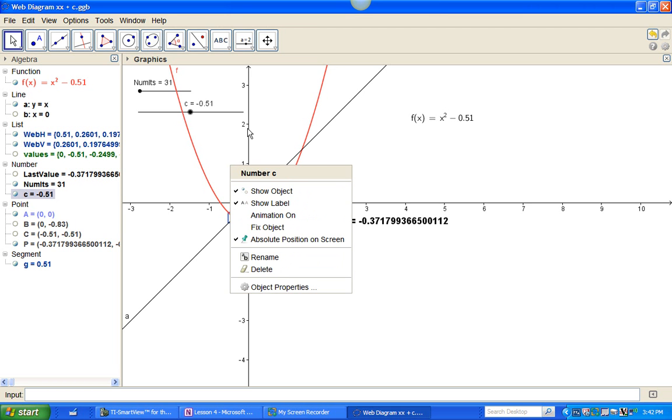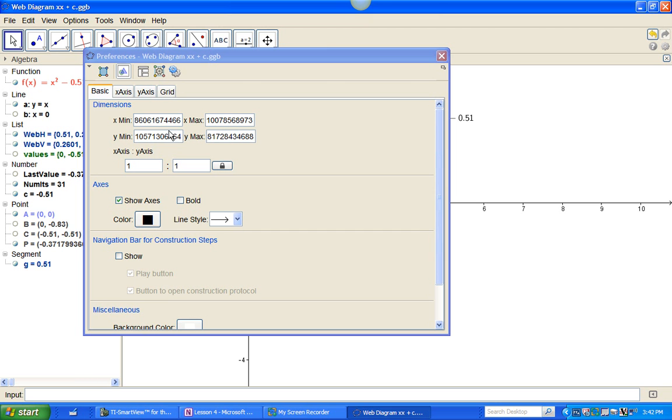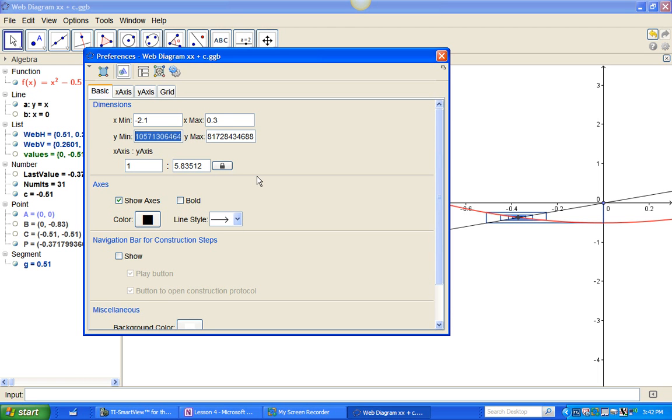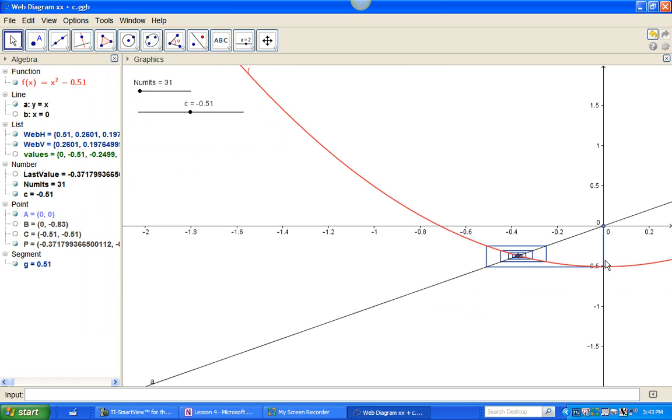Since the action is all in this region here, maybe I can go to my graphics and I can change things. Let's make our x min negative 2.1 because we're not really interested in less than negative 2. And let's make my x max 0.3 because we don't care about anything beyond 0.25. And let's make my y min negative 2 and my y max 2. Let's just see what that looks like. There we go. All right. All the action in here. You can see it's homing in.